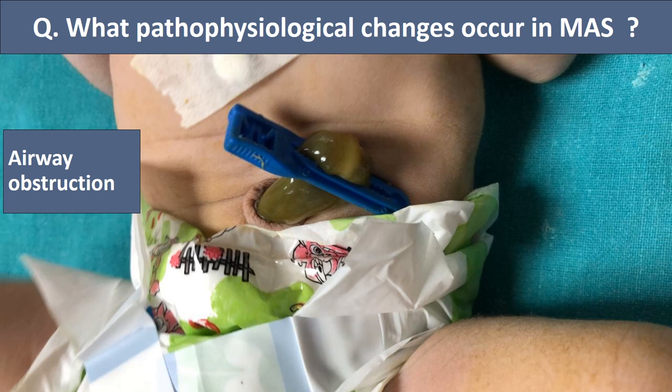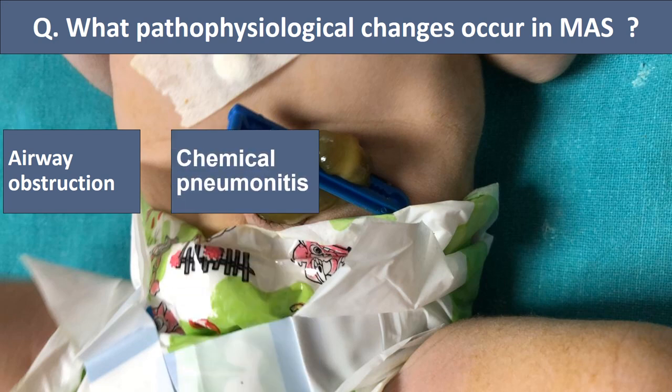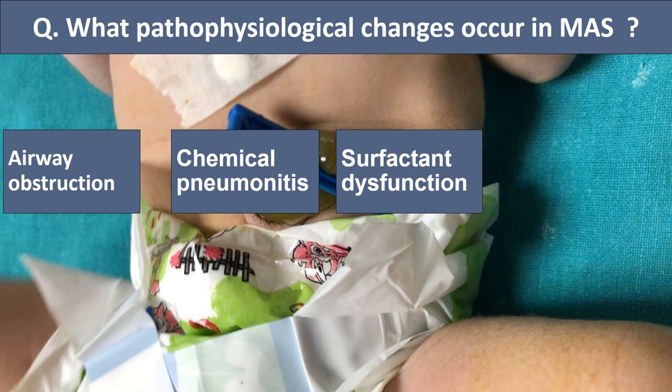Due to the direct toxic effect of meconium on the lung parenchyma and alveoli, chemical pneumonitis develops, and various inflammatory mediators are released which further damage lung tissue. Additionally, substances in the meconium inactivate endogenous surfactant, and the cytotoxic effect on type 2 pneumocytes leads to decreased levels of surfactant protein A and B. Ultimately, surfactant dysfunction causes atelectasis and ventilation-perfusion mismatch.